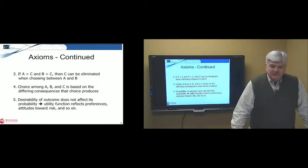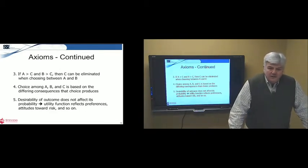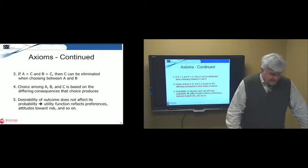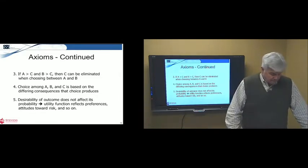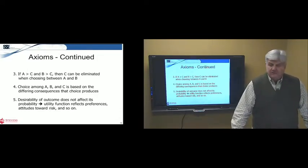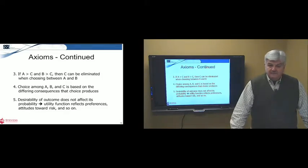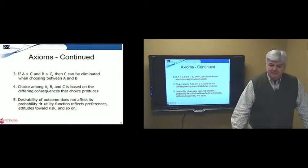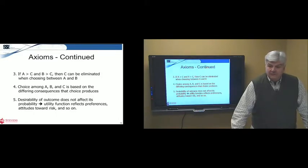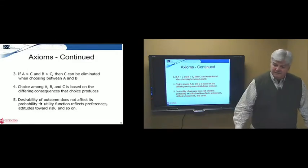Fourth axiom, if A is preferred to C and B is preferred to C, then you can eliminate C. Choices among A, B, and C is based on the differing consequences that the choices produce. If they have some similar consequences, those don't matter. And then finally, the desirability of an outcome does not affect its probability. A utility function reflects preferences, attitude toward risk, and so on. The probabilities stay as they are. Now, if you're like me, you sometimes don't believe that. I remember when I was a child, and I would wish for something at Christmas. And I found the easiest way to guarantee that I'd get it would be to wish I'd not get it. So, rather than deal with the risk that I wouldn't get something, I would hope that I didn't get it. And sure as anything, it resulted in the probability going up. At least that's what I felt like when I was four, five, or six.